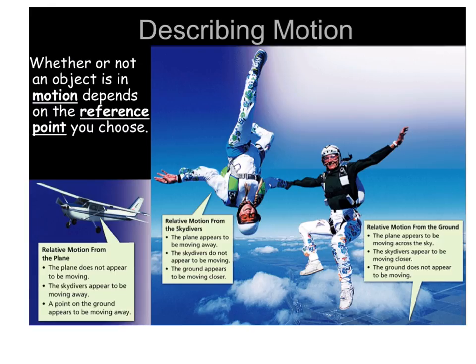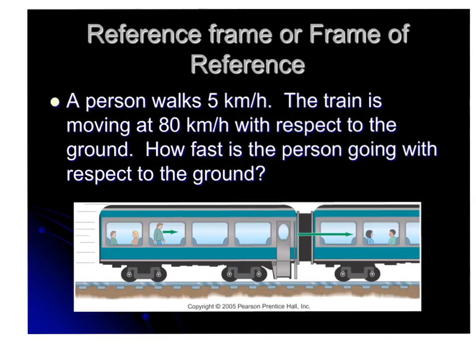Whether or not an object is in motion depends on the reference point you choose. So let's think about this. If a person is walking 5 km per hour, and the train is moving 80 km per hour, with respect to the ground, how fast is the person going with respect to the ground? In that case, we would add the two together, 80 plus 5, to give 85 km per hour. But if we said, in respect to the train, how fast is the person walking, then they're only going 5 km per hour.